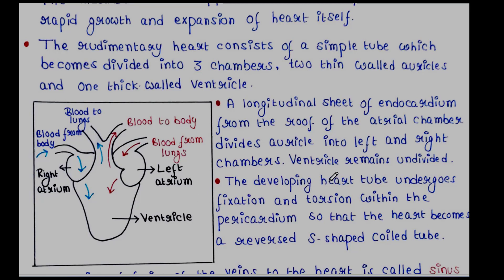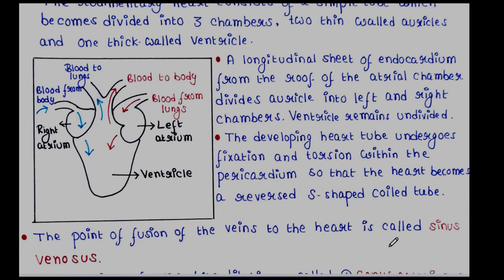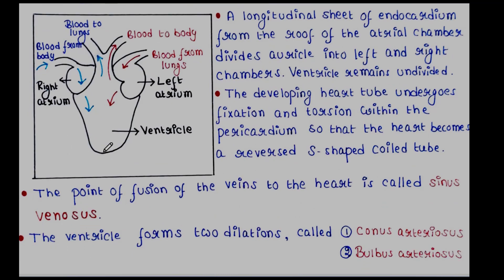The developing heart tube undergoes fixation and torsion within the pericardium so that the heart becomes a reversed S-shaped coil tube. The point of fusion of the veins to the heart is called the sinus venosus. The ventricle forms two dilations called conus arteriosus and bulbus arteriosus.